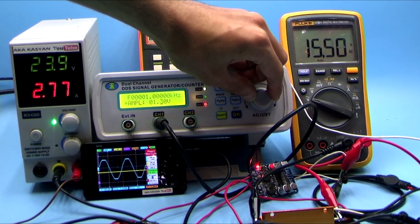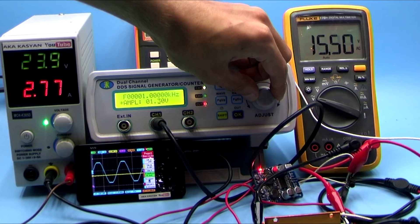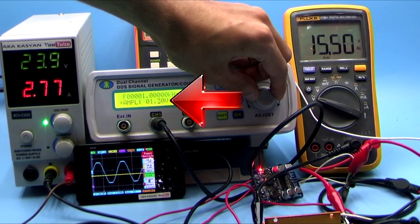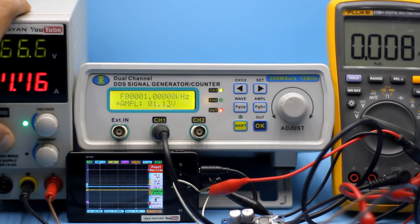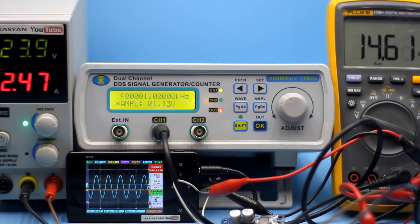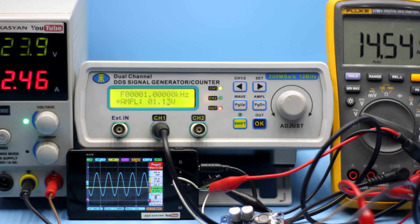Clipping appeared at 15.5 volts at the output, and the amplitude of this input signal was 1.3 volts. Having made a second measurement for more accurate results, it became clear that up to a voltage of 14.5 volts, the signal at the output was clean.